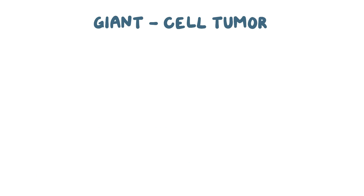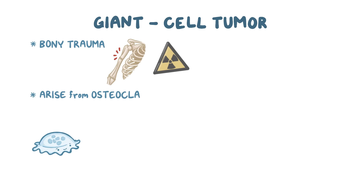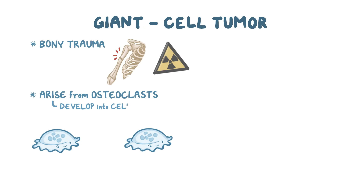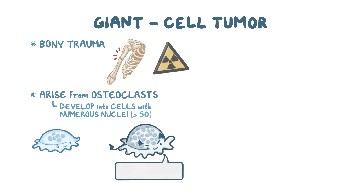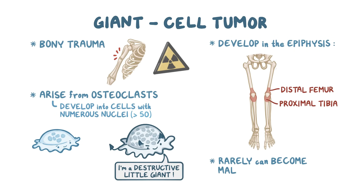Another benign tumor is the giant cell tumor of the bone. A risk factor for giant cell tumors is having bony trauma like a fracture or radiation exposure. The tumor cells arise from osteoclast cells but then develop into cells that have numerous nuclei, typically over 50 nuclei, so you can think of them as destructive little giants. The giant cell tumor typically arises in the epiphysis of long bones, like the distal femur and proximal tibia. On rare occasions, this tumor can become malignant, especially in elderly individuals.